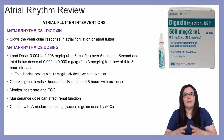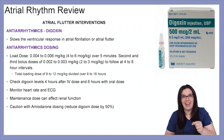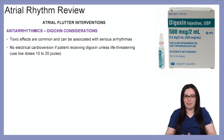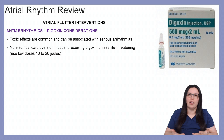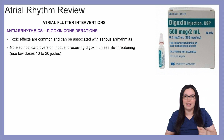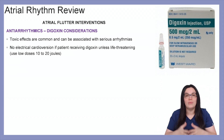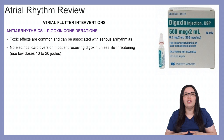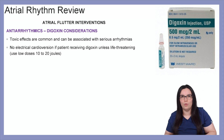Give digoxin cautiously when also giving amiodarone, because if both are given we need to reduce digoxin dosages by 50%. Toxic effects are common and can be associated with serious arrhythmias — digitalis toxicity is a common theme behind many arrhythmias, so monitor the ECG very closely. Avoid electrocardioversion in patients receiving digoxin unless absolutely necessary and life-threatening; if cardioversion must be given, use lesser joules such as 10 to 20 joules.